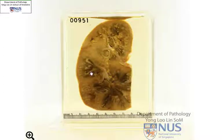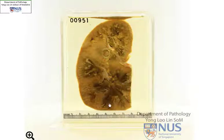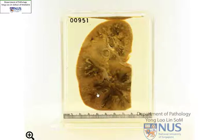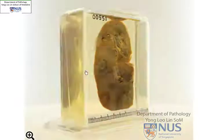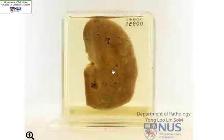We're looking at a specimen of a kidney. The surface we're looking at is the cut surface, showing the pelvicalyceal system. This is the renal cortex, and this area would be the medulla. Flipping it around, we are looking at the capsular surface.